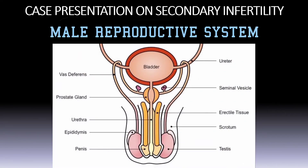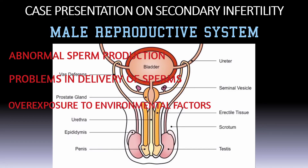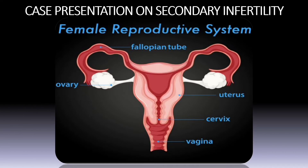In males, infertility may be due to abnormal sperm production or function, problems with the delivery of sperms, overexposure to certain environmental factors like pesticides, chemicals, radiation, and certain drugs, and damage related to cancer and its treatment. In this case, the patient is a female who developed secondary infertility due to blockage in fallopian tubes. Coming to epidemiology, the ratio of prevalence of primary to secondary infertility is approximately 2:1, so we come across primary infertility more often than secondary infertility.